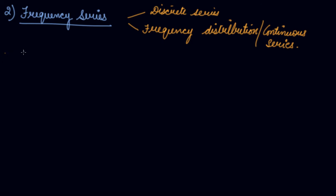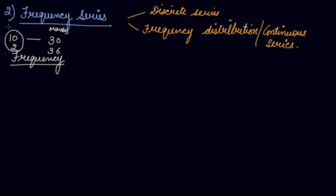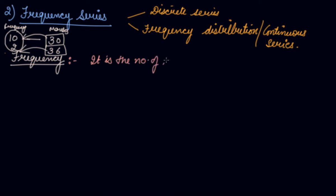The first question is: what is frequency? Suppose there are 10 students who got exactly 30 marks, and there are 2 students who got 36 marks. So frequency is the number of times an item occurs in the series. 30 comes 10 times because 10 students scored 30, and 36 comes 2 times because 2 students scored 36.